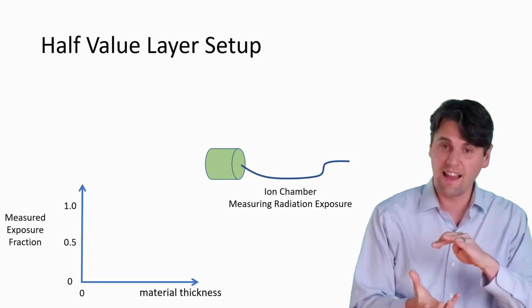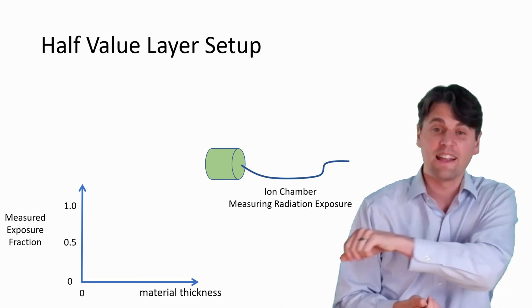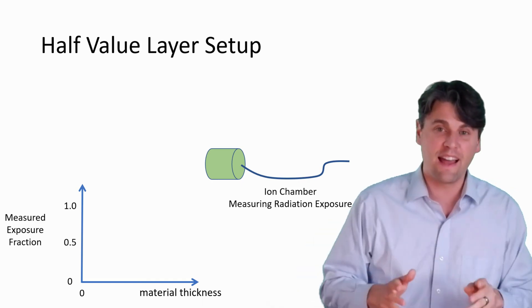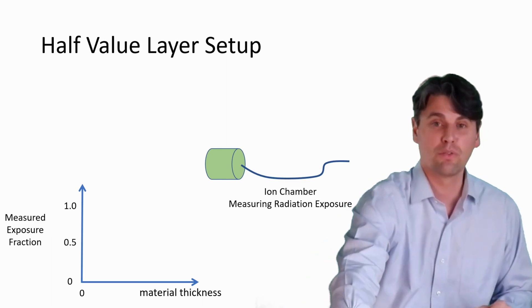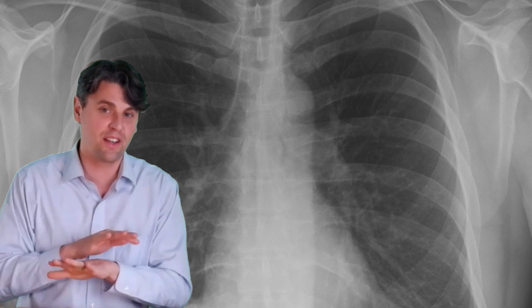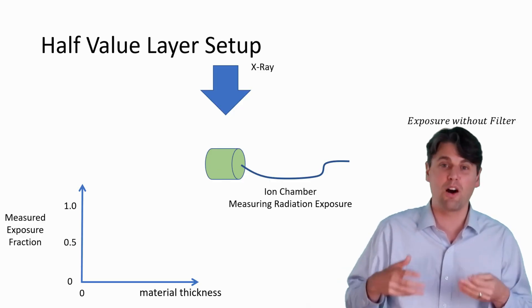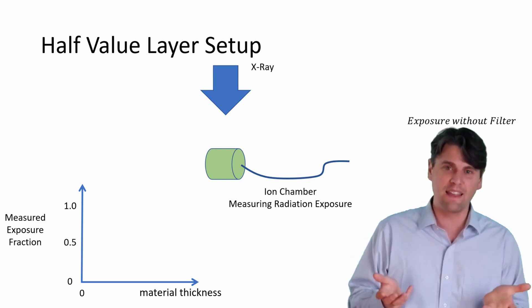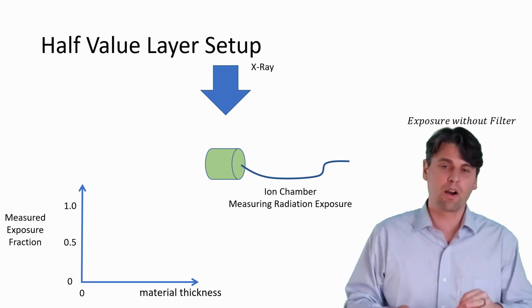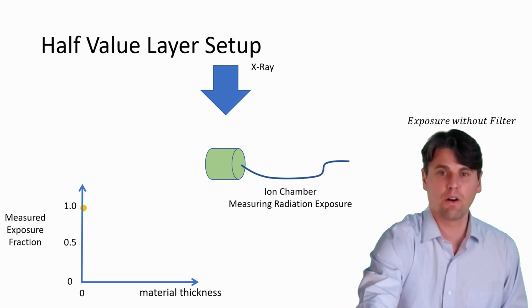Those electrons are going to get amplified, the signal is going to come out, and that signal is going to be proportional to the exposure. Next off, we do that with no filtration in the beam. It gives us our exposure without filtration. We're going to use that for what we call normalize or divide the other data by this number because this is our baseline value for the exposure with no filtration.